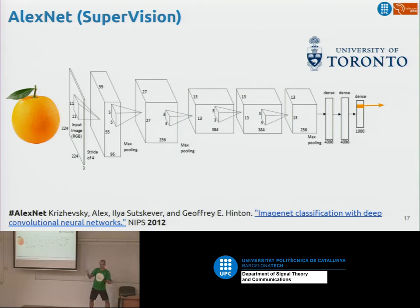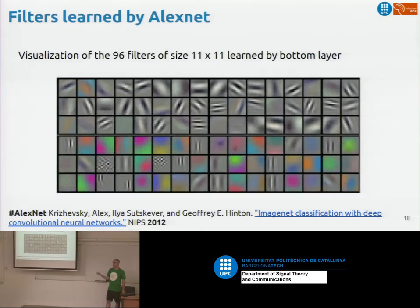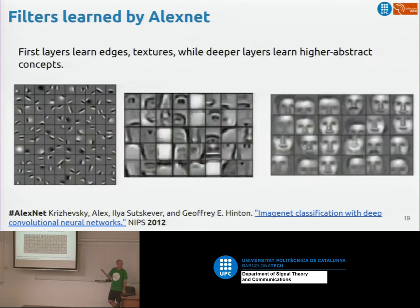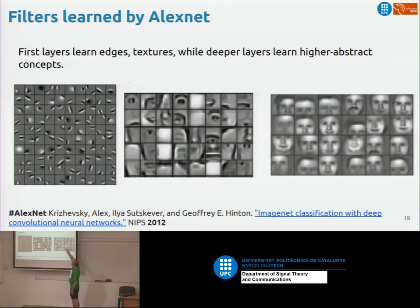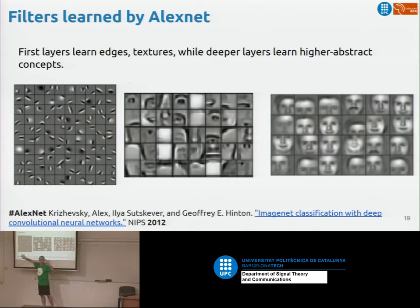If you look at the filters that AlexNet learned, you can see what kind of patterns they capture. In the first layers, the filters were learning very perceptual characteristics — edges, colors — totally trained end-to-end with backpropagation, with nobody hand-engineering the best filters. In the deeper layers, the patterns that triggered the highest response were more complex and semantic — for example, face-like patterns in the deeper parts of the network. The deeper you go, the more semantic the features.